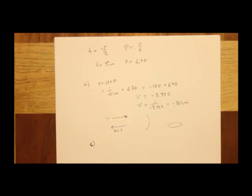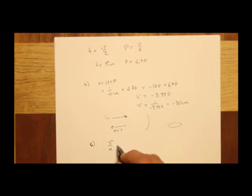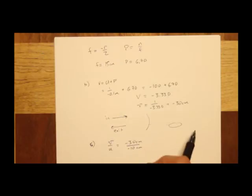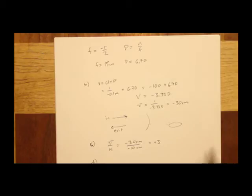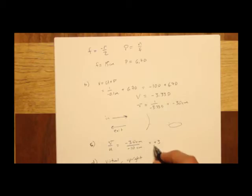The lateral magnification is v over u: negative 30 cm divided by negative 10 cm equals positive 3. Anything located behind the mirror can't be a real image, so it's a virtual image. It's upright because the magnification is positive, and it's magnified because the magnitude is greater than 1.